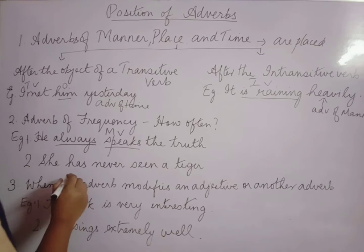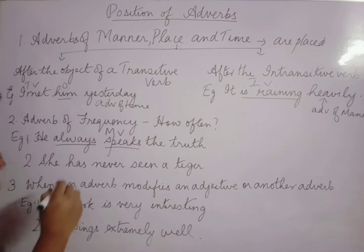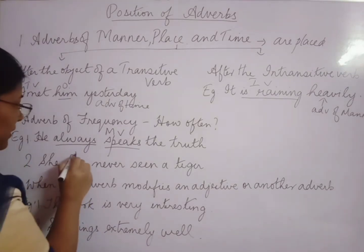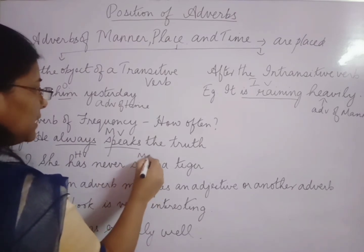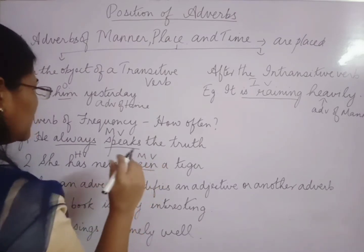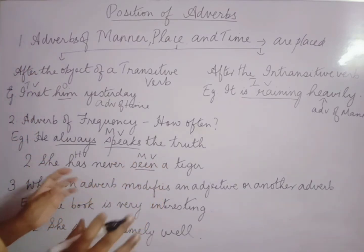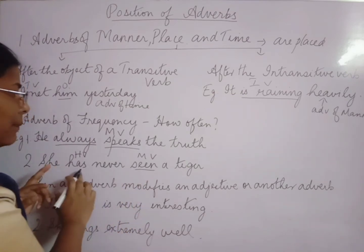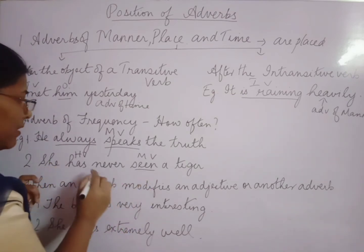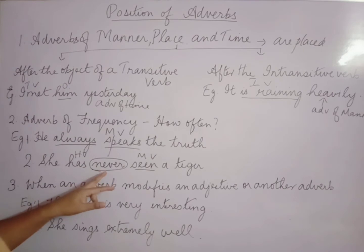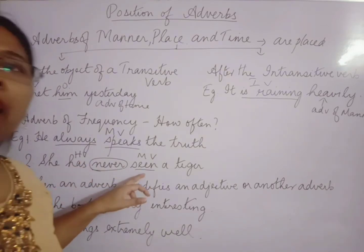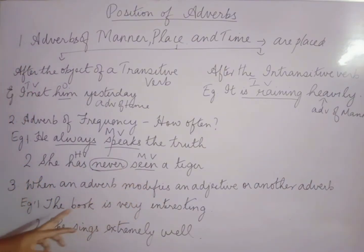Now, adverb of frequency when there are two verbs. For example, if there is a helping verb 'has' and a main verb, the adverb of frequency is placed between the helping verb and the main verb. 'Never' is the adverb of frequency placed between the helping verb and the main verb.